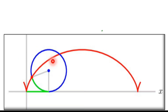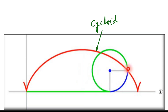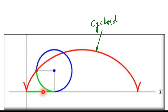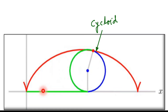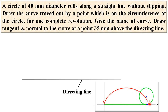We are going to draw the cycloid — the rolling circle rolls on the straight line. The point on the circumference of the rolling circle traces the path known as the cycloid, and we are going to draw this for one revolution only. This here is the directing line on which the rolling circle rolls.